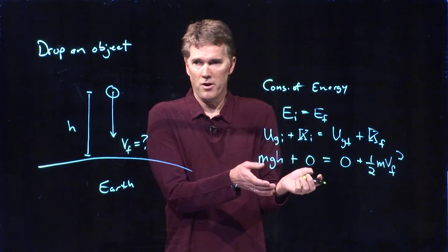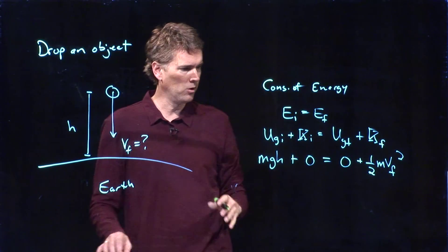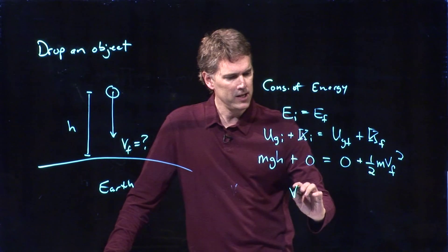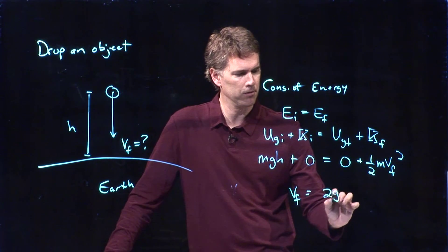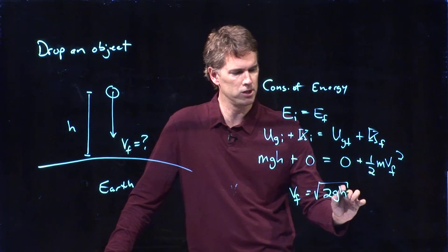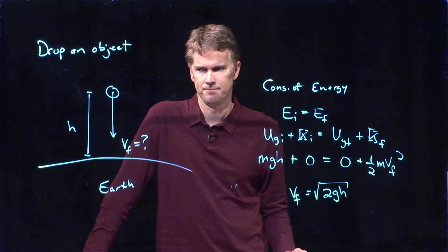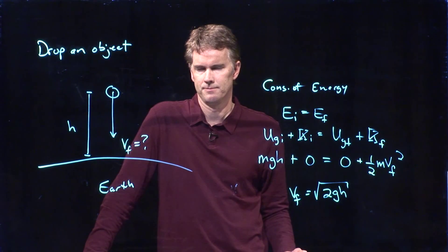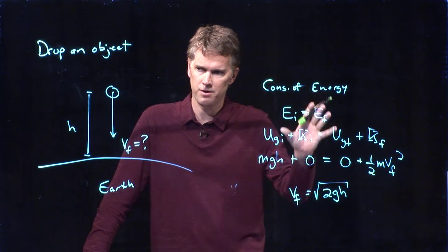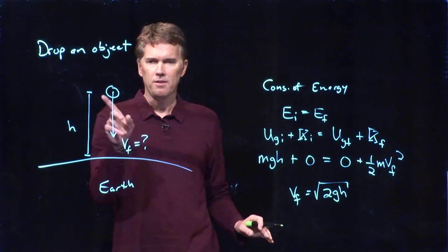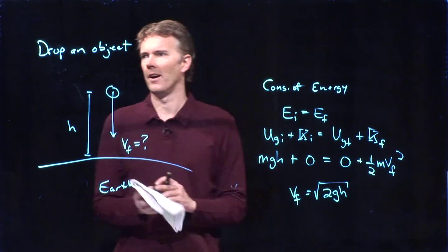Now this should look very familiar. This looks exactly like we did with the skier on the slope. We get vf is equal to the square root of 2gh. Again. Pretty cool and pretty straightforward, I think. Very simple derivation. But let's take this problem now and slightly modify it.